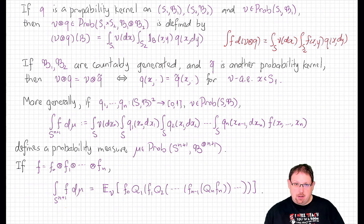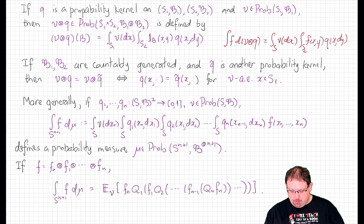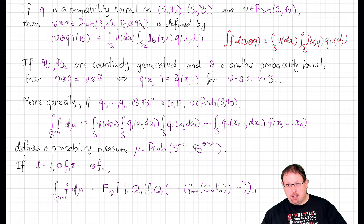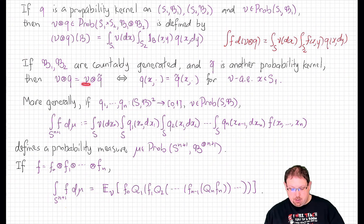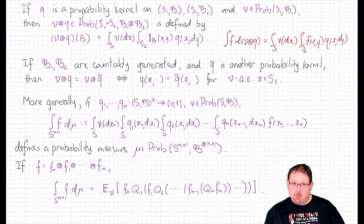In the case where f is a tensor product function, integrating this formula just means iterating the following: take the last function and apply the nth transition operator to it, multiply by the next function and apply the (n-1)th transition kernel, and so on — multiplying by function, applying transition kernel, multiplying by function, applying transition kernel — and then in the end take the expectation with respect to the base measure nu. We will see shortly that these iterated operations are exactly the way we compute the finite-dimensional distributions of any Markov process.